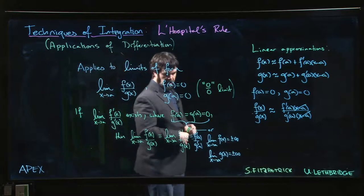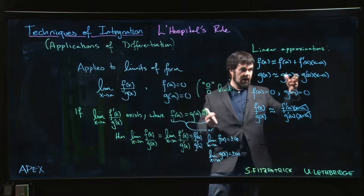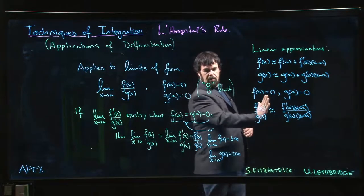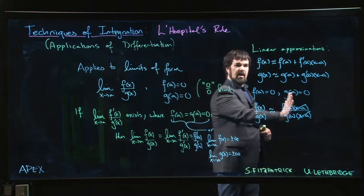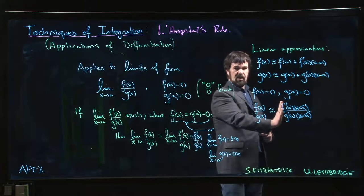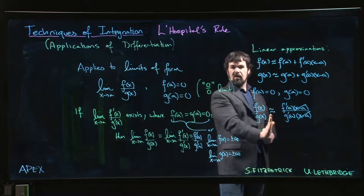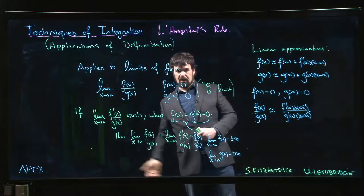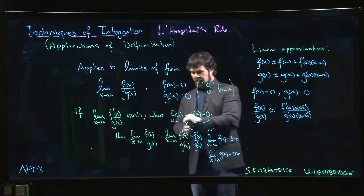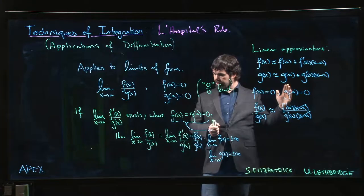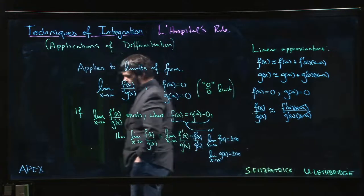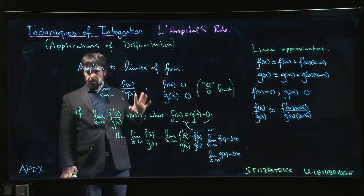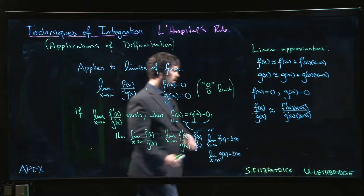Another thing to keep in mind: sometimes the first derivatives of f and g are also equal to zero at a, so you might have to go to the second or even third derivative — it's possible to apply L'Hopital's rule multiple times, as long as you eventually reach a limit that exists. If the limit exists at, say, the seventh derivative, you can walk back down the chain to the original functions. But if you never reach a point where that final limit exists, then again you can't use L'Hopital's rule. It's a big hammer, but don't apply it blindly or you can get yourself into trouble.